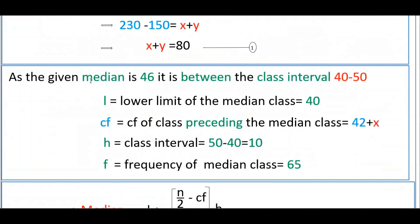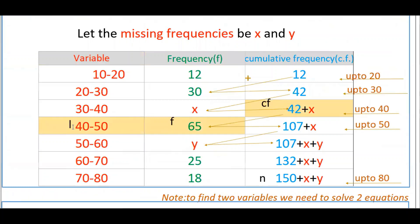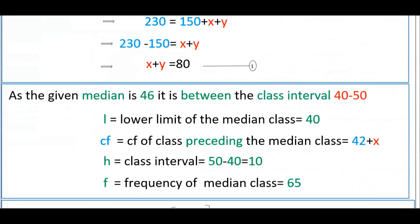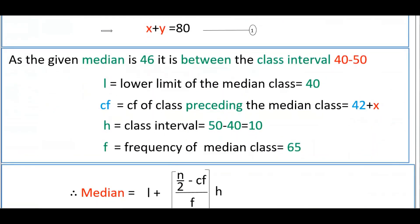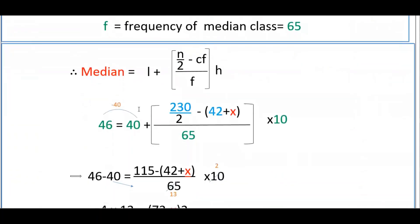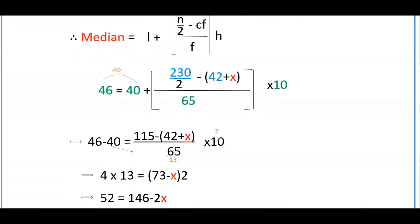For the second equation, use the median formula. The median is 46, which lies between the class interval 40 to 50. So l equals 40, frequency f equals 65, cf equals 42 plus x, n equals 230, and h equals 50 minus 40 equals 10. Substituting: 46 = 40 + (115 − (42 + x)) / 65 × 10.